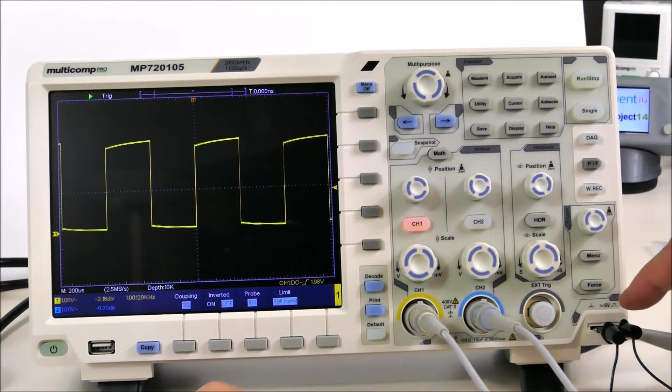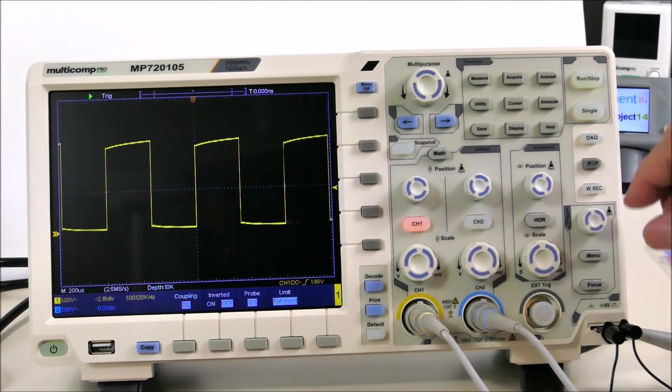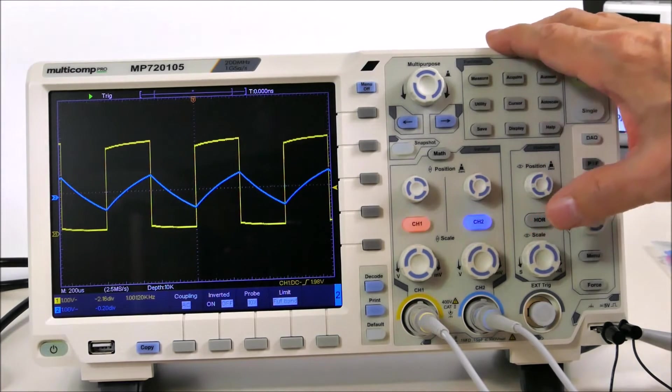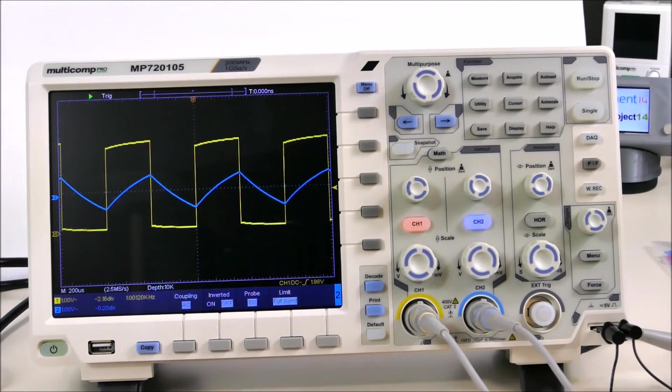Now I've run this square wave signal through a little RC capacitor as well, so we can get something different on the other channel. So I turn that on. You can see that it's an RC waveform based on this square wave input.